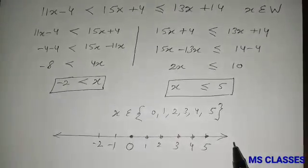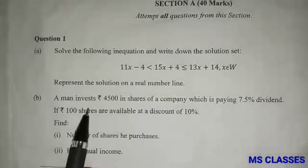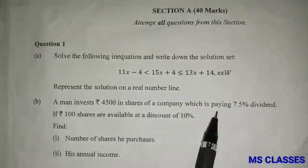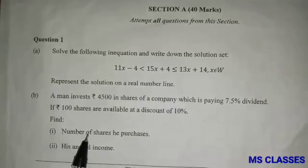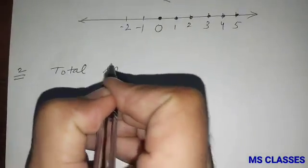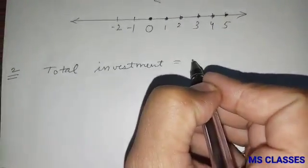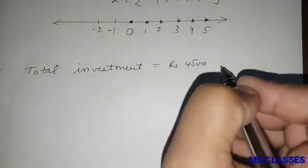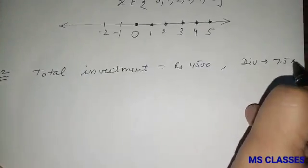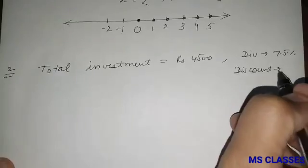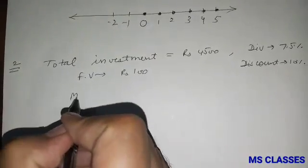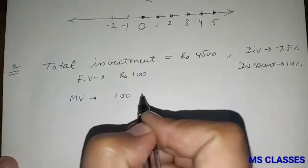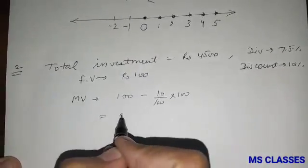Next question: a man invests rupees 4,500 in shares of a company paying 7.5% dividend. Rupees 100 shares are available at a discount of 10%. Total investment is rupees 4,500, dividend percentage is 7.5, discount is 10%, and face value is rupees 100. The market value is 100 minus 10% of 100, which equals rupees 90.